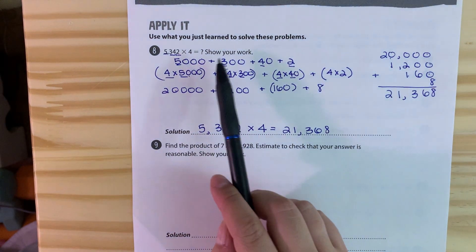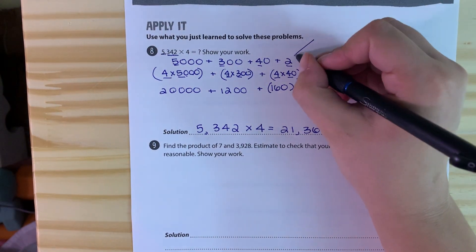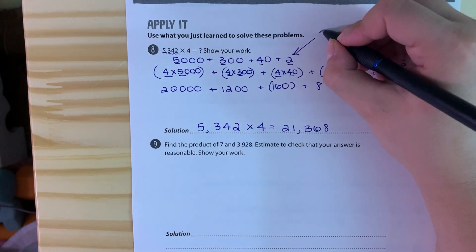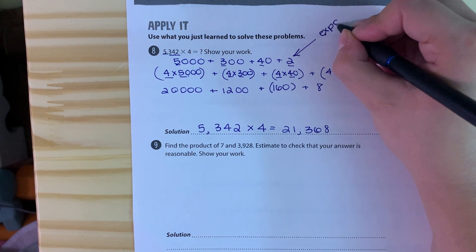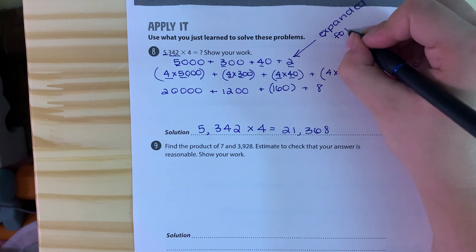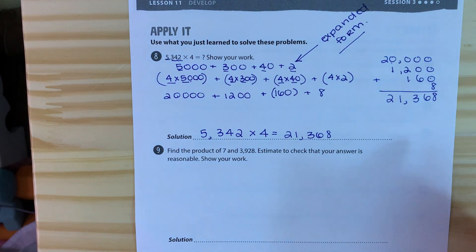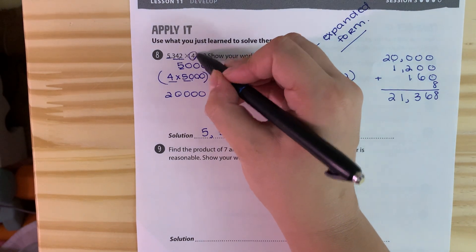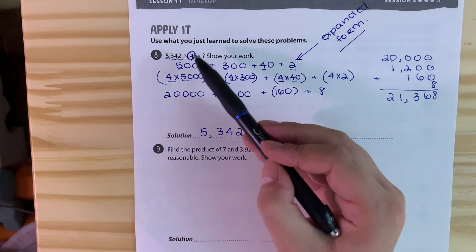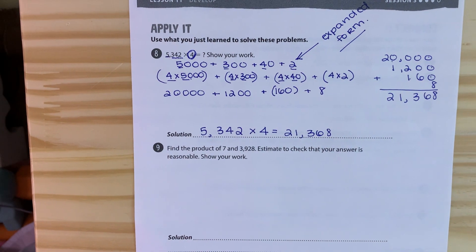So again friends, we just broke it apart by place value using the expanded form. This all right here is the expanded form. We went over it in the beginning of the year. You did it in third grade last year. You probably did it in second grade. This is just expanded form. And then we just have to remember to keep the number from the problem and multiply this number by each part of the expanded form, so each place value.